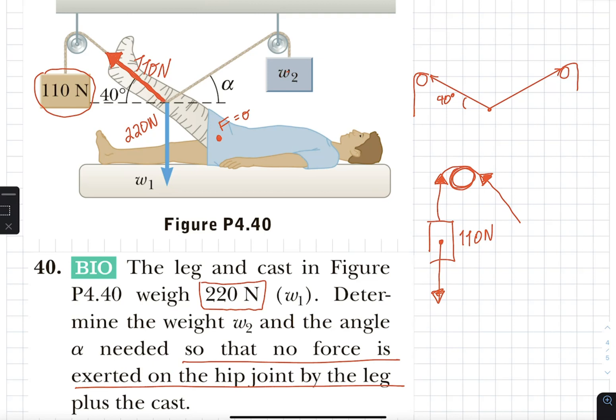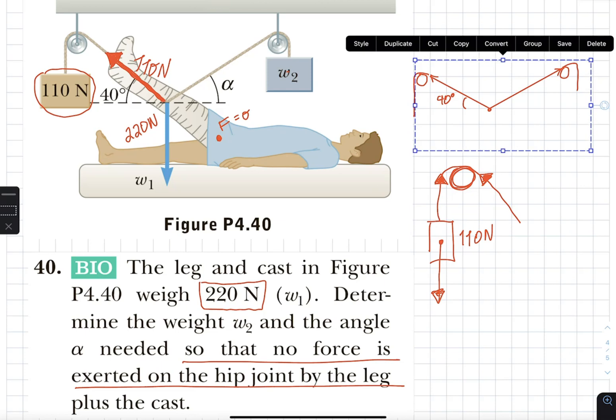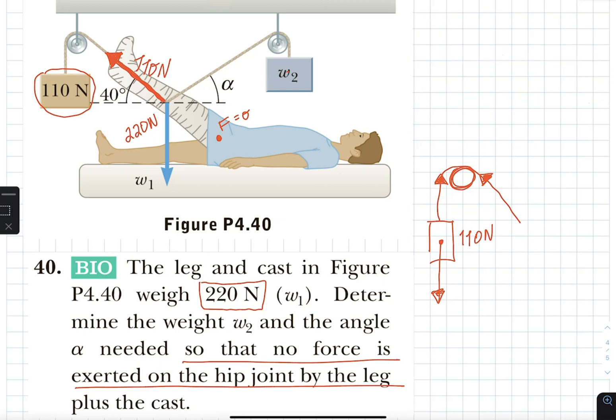So that gives us 110 newtons in the rope that is making a 40 degree angle with the horizontal, where it is attached to the leg. Then, I can split that 110 at 40 degrees into two components. And I am going to call it just like you did before, left force.